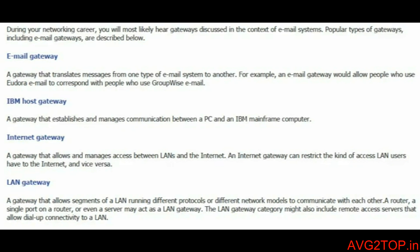Gateways are of four types: the email gateway, the IBM host gateway, the internet gateway, and the LAN gateway. In the email gateway, it translates a message from one type of email system to another. For example, with a group email, if another system tries to send an email to the group, it modifies or translates the message according to the group topics or group information, providing relevant information from the source.